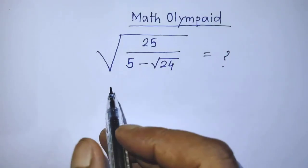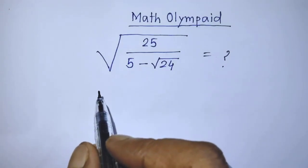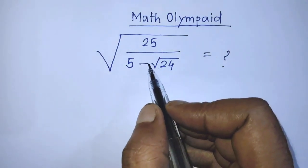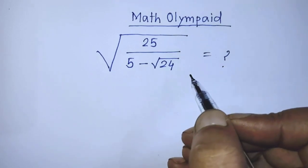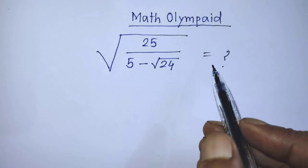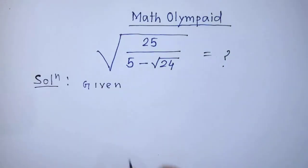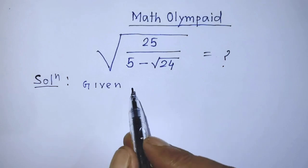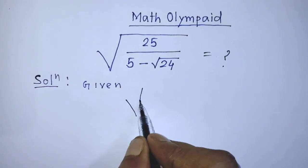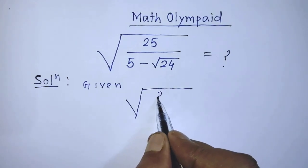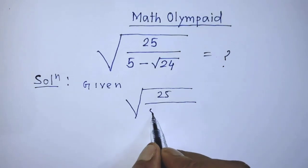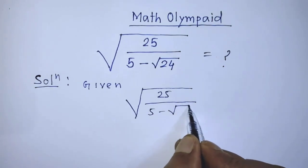Hello guys, you are welcome. Today we will solve this math problem: the square root of 25 over the quantity 5 minus square root of 24. I am telling you how to simplify this algebraic expression. Our given algebraic expression is square root of 25 over 5 minus square root of 24.